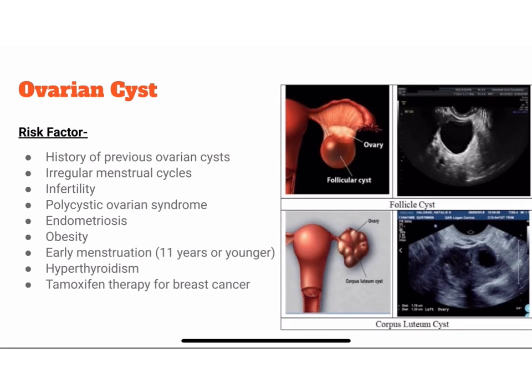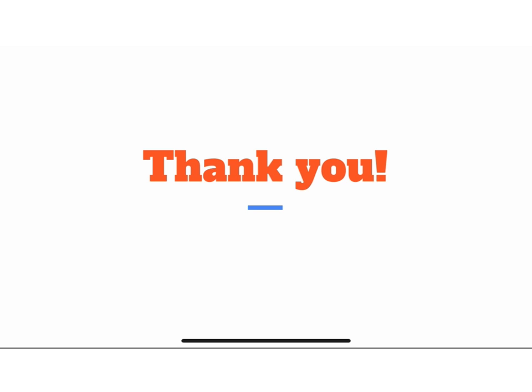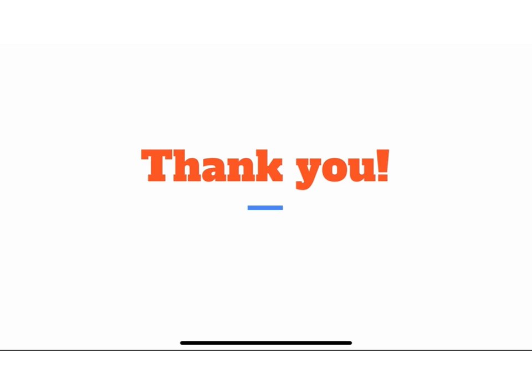The risk factors for ovarian cysts are history of previous ovarian cysts, irregular menstrual cycles, infertility, PCOS, endometriosis, obesity, early menstruation, hyperthyroidism, and tamoxifen therapy for breast cancer. Thank you. Have a nice day.